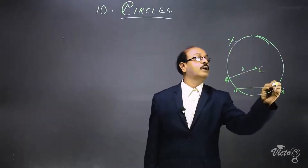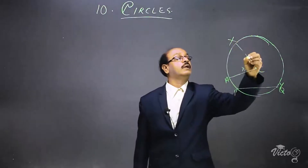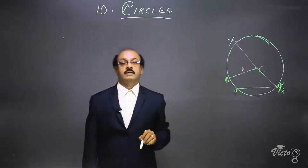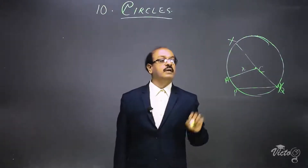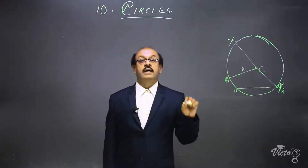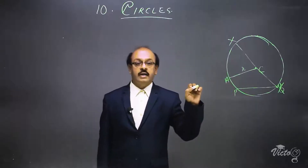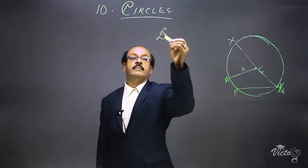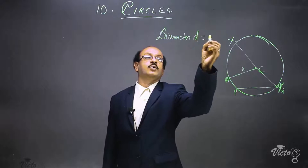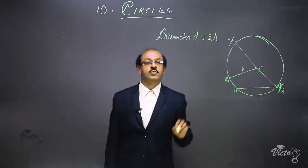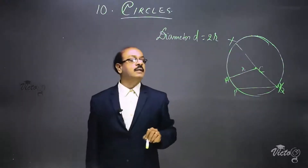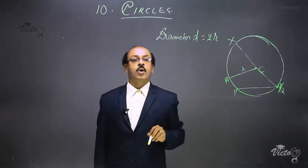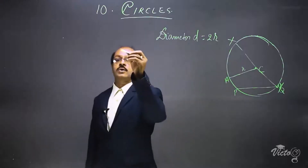X is another point on the circle and Y is another point on the circle. The line segment joining X and Y which passes through the center is called the diameter of the circle. The relation between radius and diameter is: diameter D is equal to 2R, that is twice the radius. XY is a diameter and at the same time XY is also a chord, therefore the longest chord of a circle is the diameter.